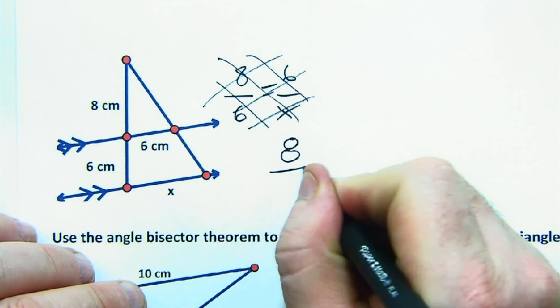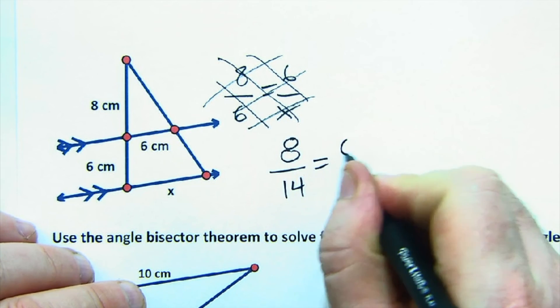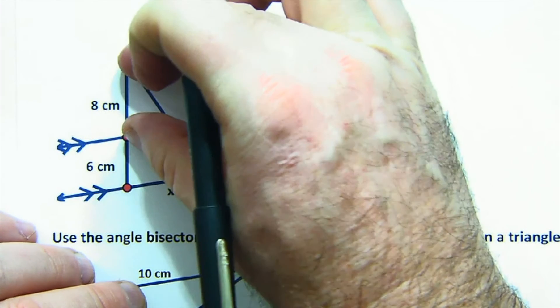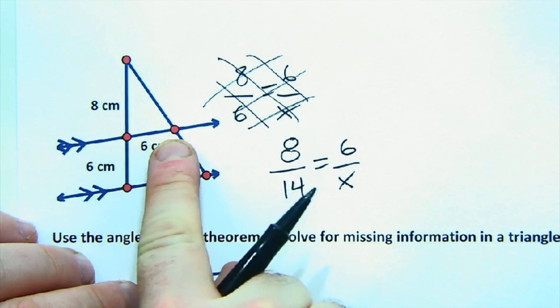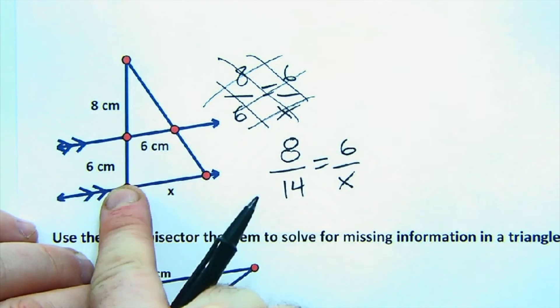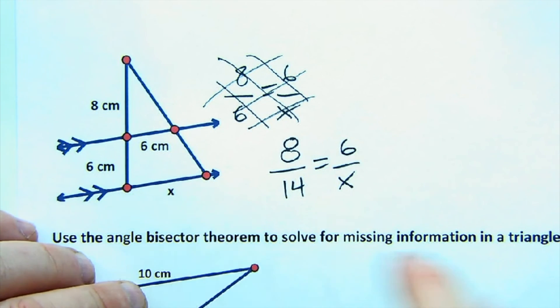8 is to 14 as 6 is to X. 8 is a full side, 6 here is a full side. 14 is a full side, X is a full side.